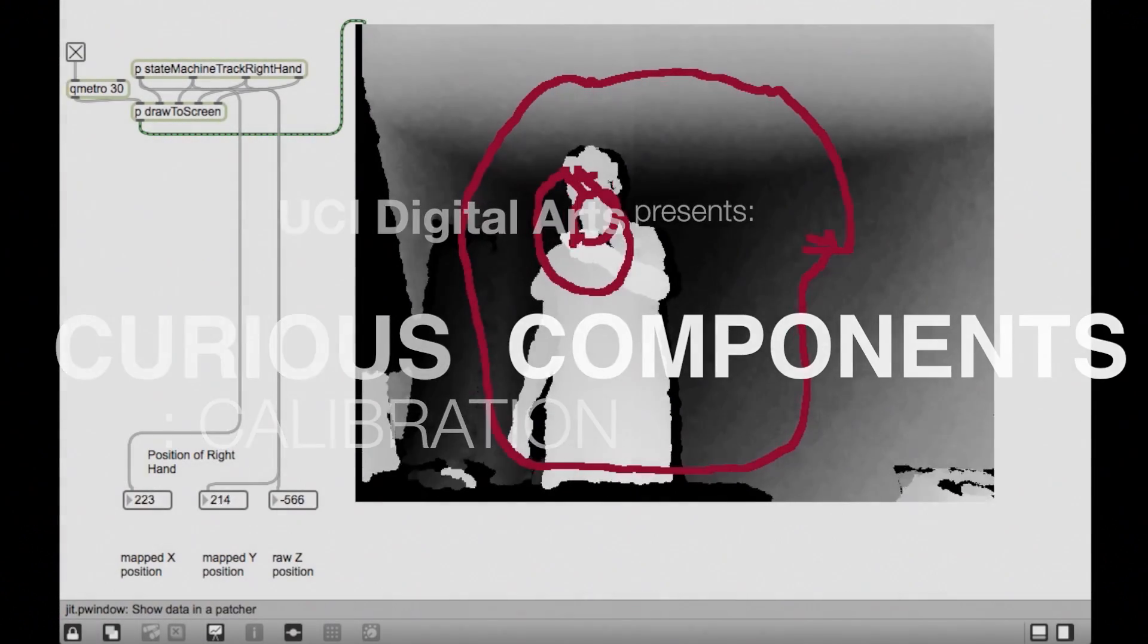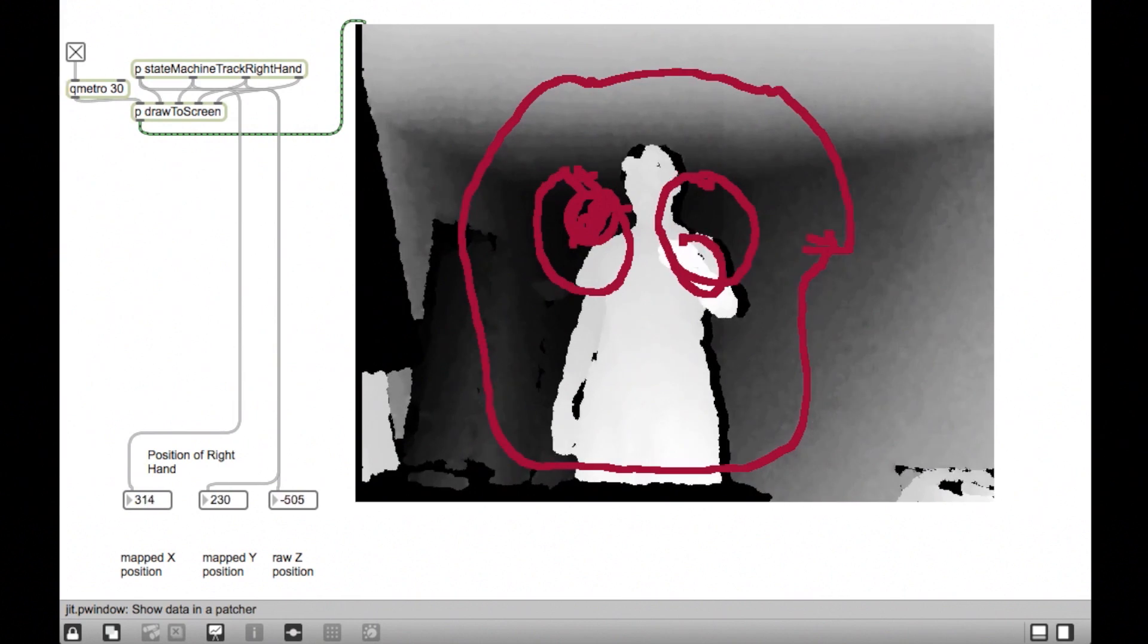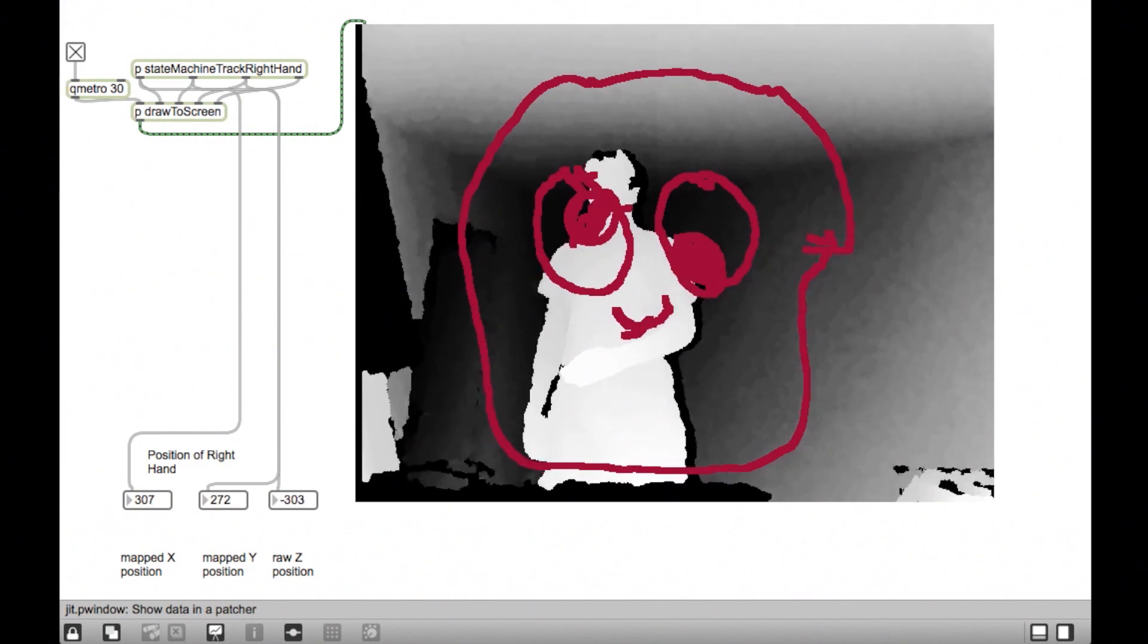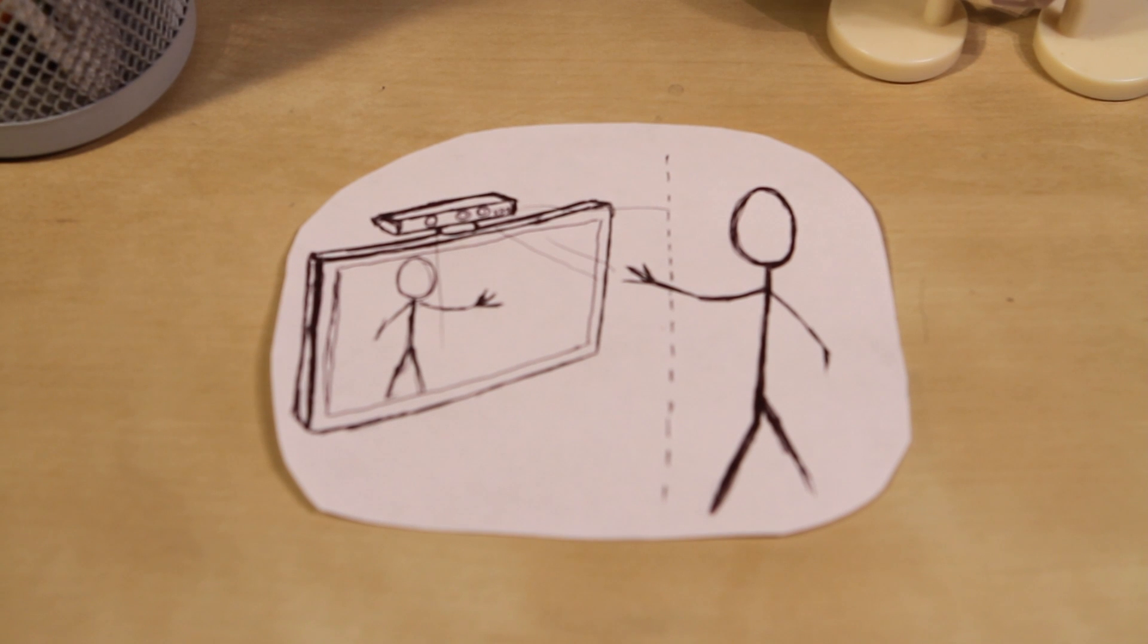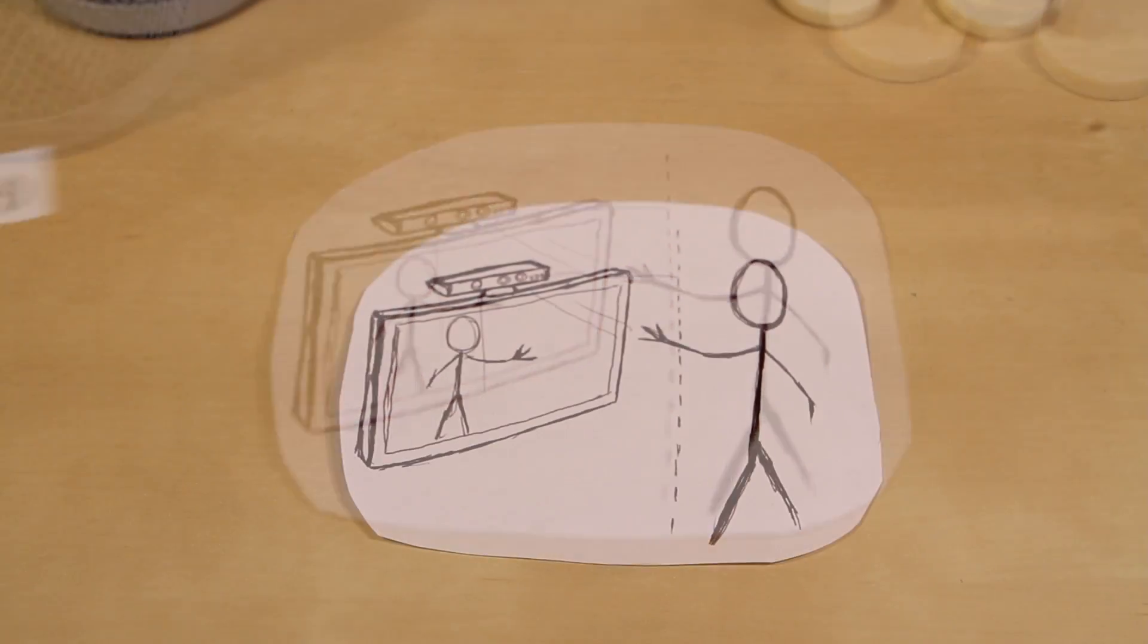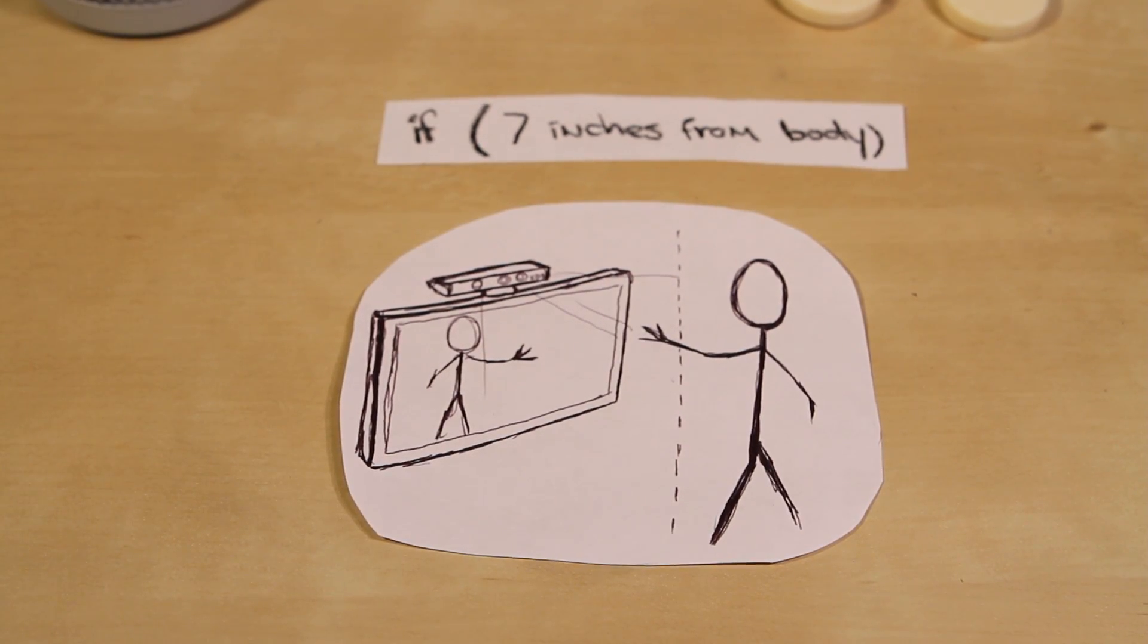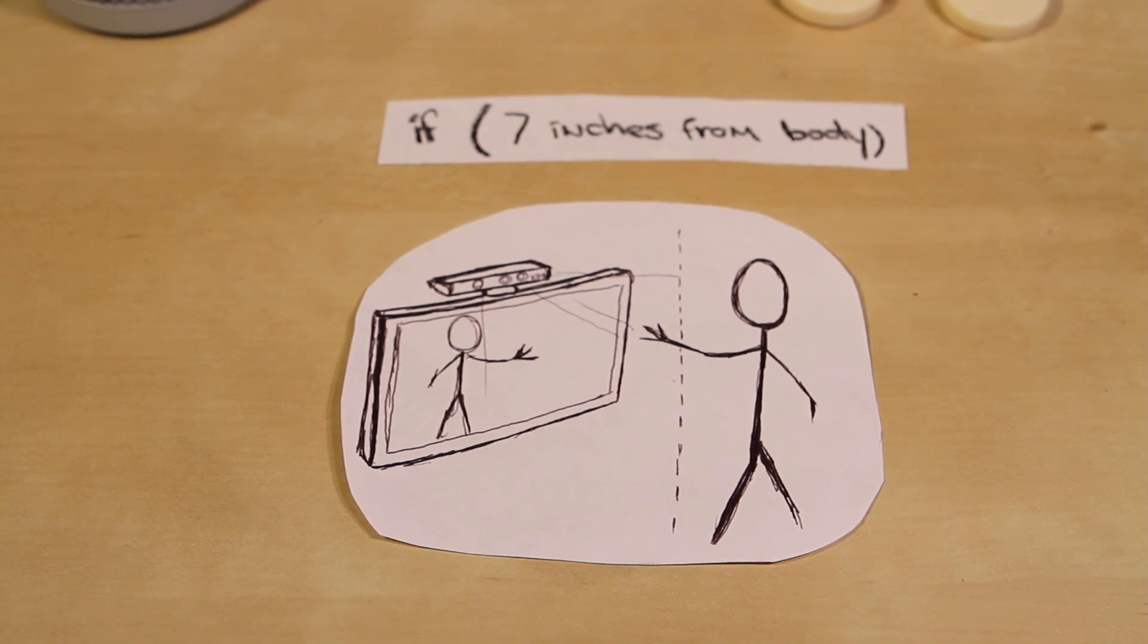Last quarter I was working on a Max MSP project where I was drawing in the air using the Kinect. So the plan was to draw on the screen when a person's hand went past a certain point. As I was programming test cases for when that happened, I ran into a problem.